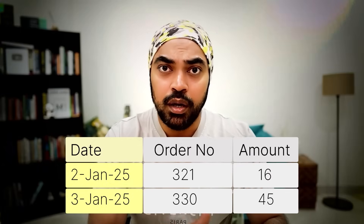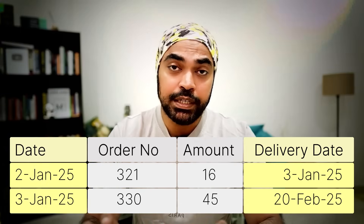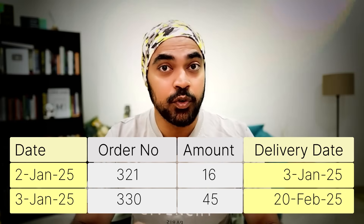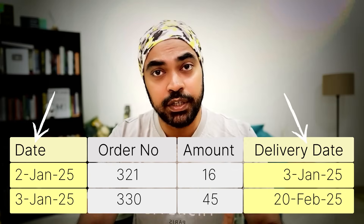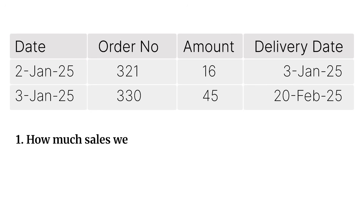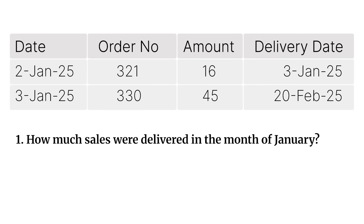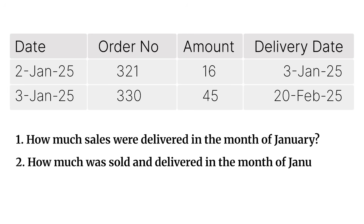Imagine you have not one but two date columns in your sales data — one for sales date and the other for delivery date. How much did you sell in January? That's easy. But how much sales was delivered in January? Not sold, but delivered. And how much of what you sold in January was also delivered in January? That's a tricky one.